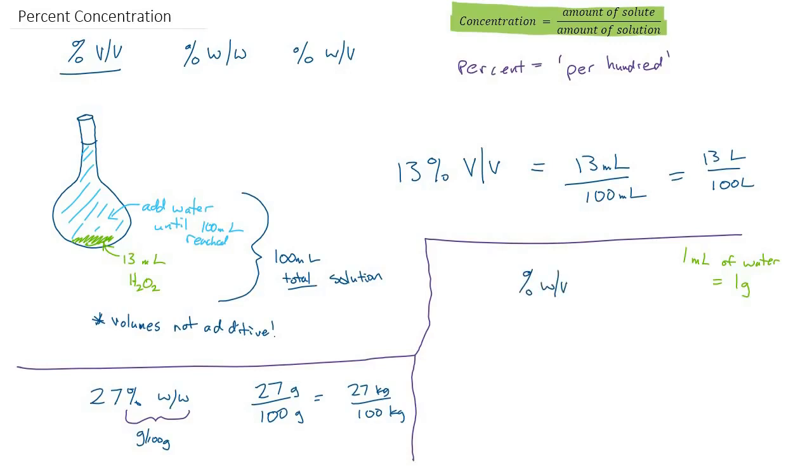Let's just pick a number. Let's suppose we have 1.7 percent weight by volume. Again it's 1.7 per hundred, but this time we have our top number measured by weight and our bottom number measured by volume. So this could be grams per hundred milliliters, or this could be 1.7 kilograms per 100 liters.